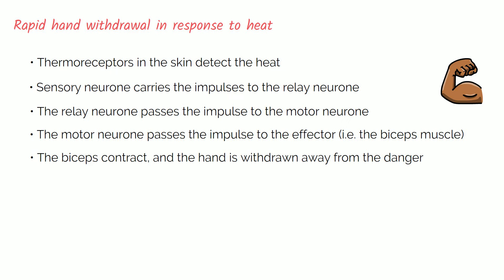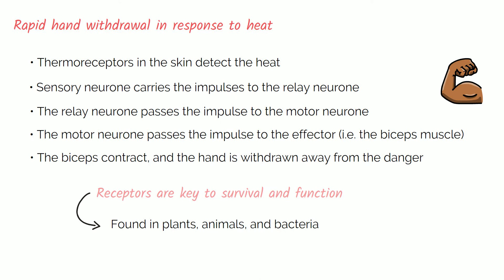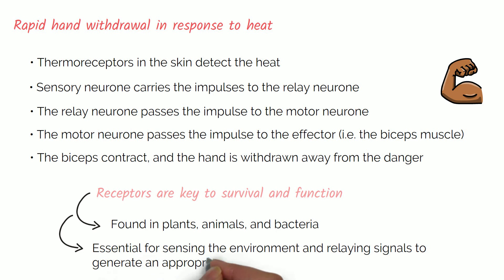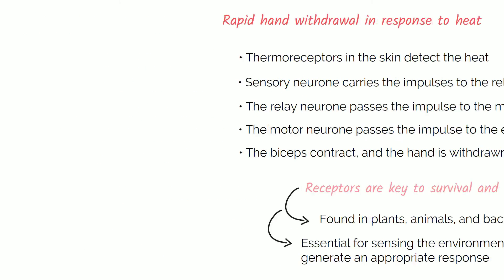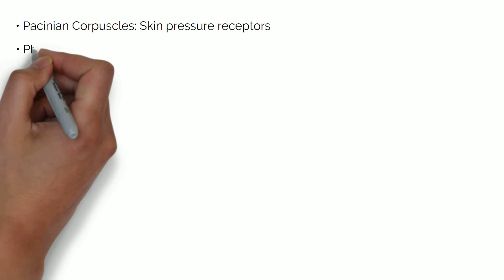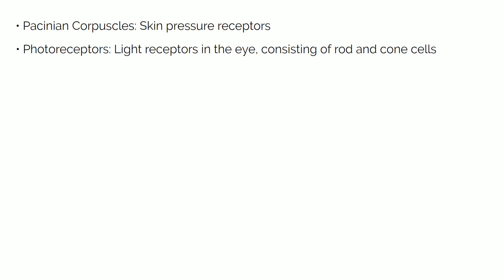Receptors are at the front line of an organism's responses — they are key to survival and function. Receptors are found in plants, animals, and bacteria, and are essential for sensing the environment and relaying signals to generate an appropriate response. Receptors are highly specific and detect only one particular type of stimulus. For example, Pacinian corpuscles are skin pressure receptors, and photoreceptors are light receptors in the eye consisting of rod and cone cells. When a receptor is stimulated to a threshold level, an action potential is triggered, leading to a response.